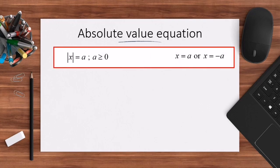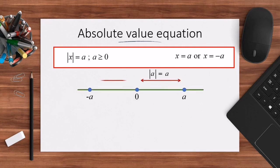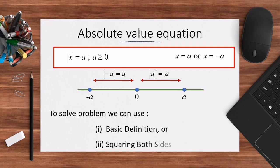The absolute value of X equals to A, where A is greater than or equal to 0, can be interpreted as X equals to A or X equals to negative A, as shown on the number line. To solve a problem, we can use either the basic definition or the squaring method. If we use squaring, we must make sure the cosine is positive. But for the basic definition there is no restriction.